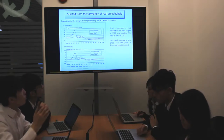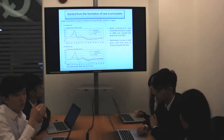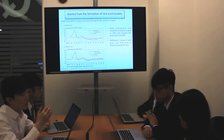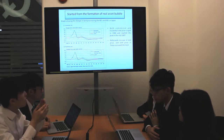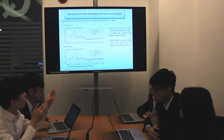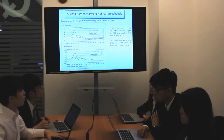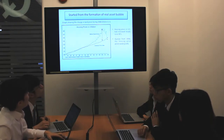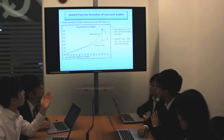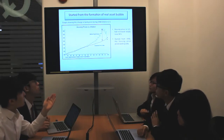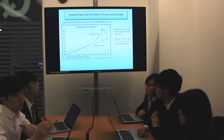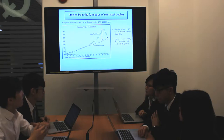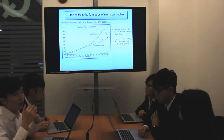In the graph here, it shows the commercial land price and the residential land price, which reached the peak in 1987, and also the nationwide increase in land price, showing that Tokyo increased the most. And for the graph showing the change in land price, you can see the housing price in the U.S. has increased steadily for at least 30 years, and it actually increased far more than the inflation rate.